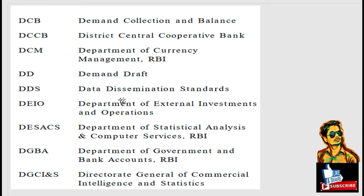DDS: Data Dissemination Standards. DEIU: Department of External Investments and Operations. DESSACS: Department of Statistical Analysis and Computer Services. DGBA: Department of Government and Bank Accounts.